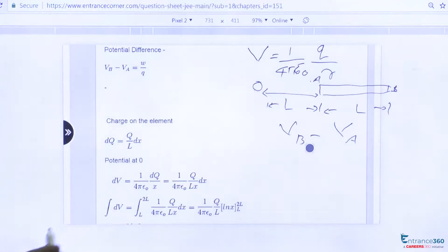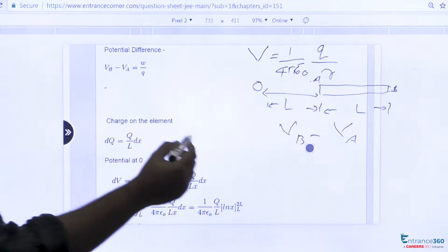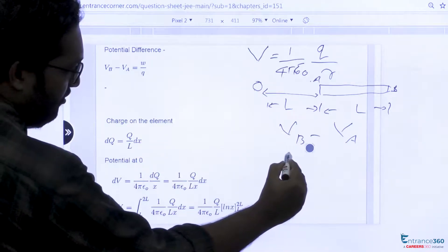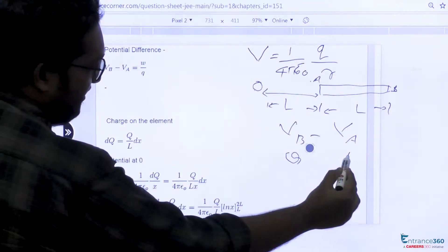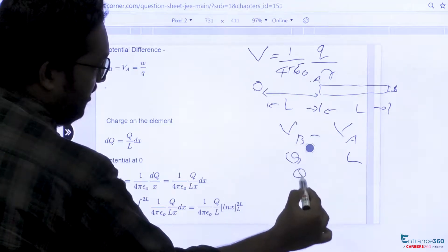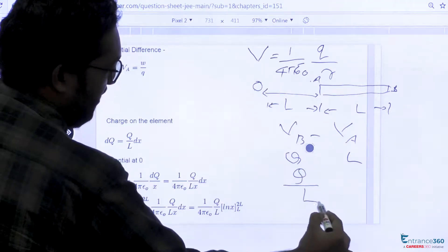So you know that the charge is uniformly distributed over the rod, along the rod. If charge is Q and length is L, charge per unit length you can write as Q by L.